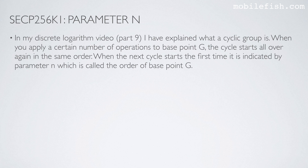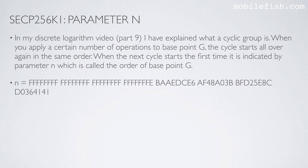In my discrete logarithm video, Part 9, I explained what a cyclic group is. When you apply a certain number of operations to base point G, the cycle starts all over again in the same order. When the next cycle starts for the first time, it is indicated by parameter N, which is called the order of base point G. N has a specific hexadecimal value.